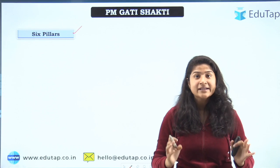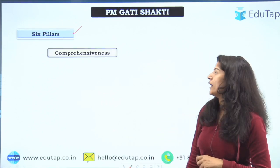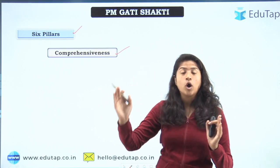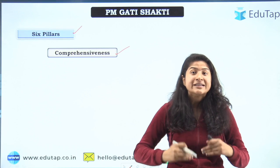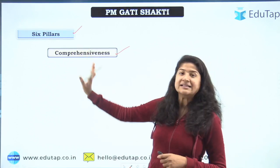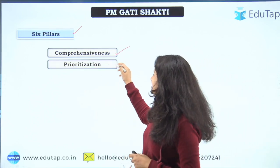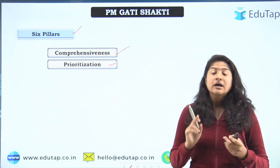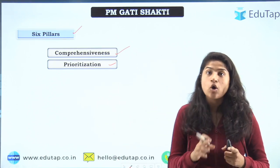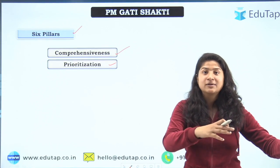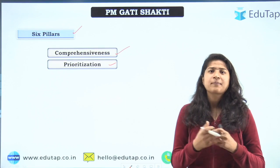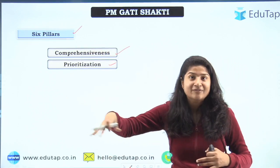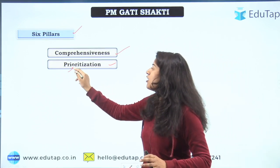This scheme has been designed around six pillars, which we will understand one by one. The first pillar is comprehensiveness — when every department has an idea of what is going on in other departments and how much time is left for them to initiate their work, that provides comprehensiveness. The second is prioritization — for example, if railway lines are to be set up in an area, pipelines should be installed first, because if pipelines are installed after the railway line is made, there would be a loss of money.